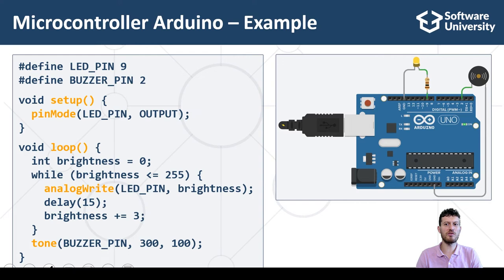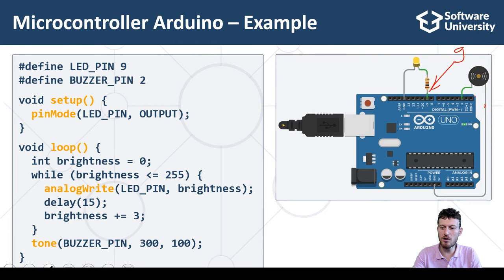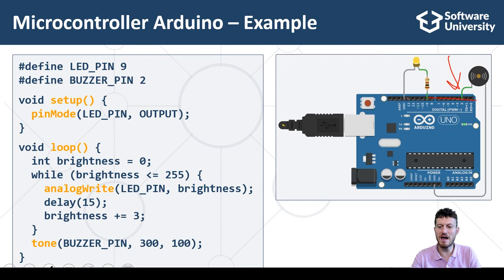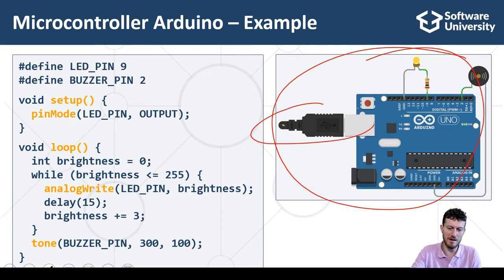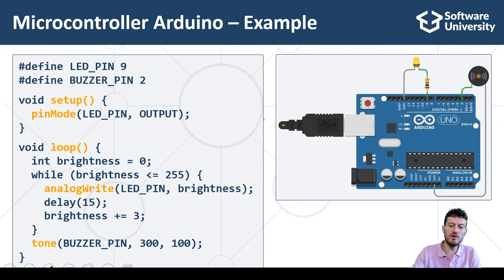This example runs on a standard Arduino board with an LED light connected to pin 9 from the GPIO of the board, behind a resistor. To run the example, we need an Arduino board connected to the Arduino IDE over a USB cable. Alternatively, we can use an Arduino simulator such as Tinkercad.